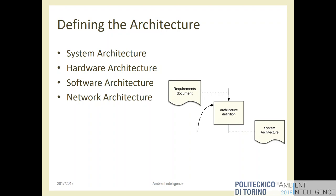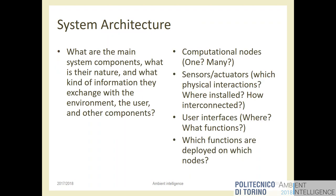What is the architecture? We split it into four areas: system, hardware, software, and network architectures. The system architecture is the general picture of how the system is organized — the list of hardware, software, and network components and how they relate to each other. How many computers do we have? One central computer plus several Raspberry Pis plus Arduinos plus a cloud service? Two big computers? Computation on the smartphone?